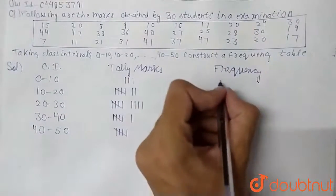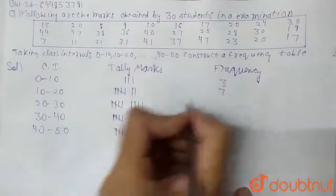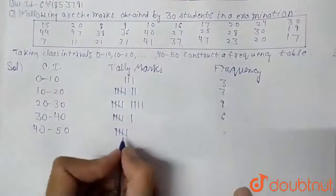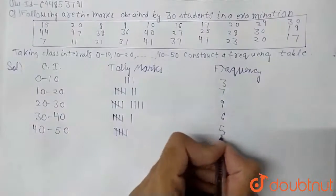So if we write here, this is 3, then this is 7, then this is 9, then this is 6, then this is 5.